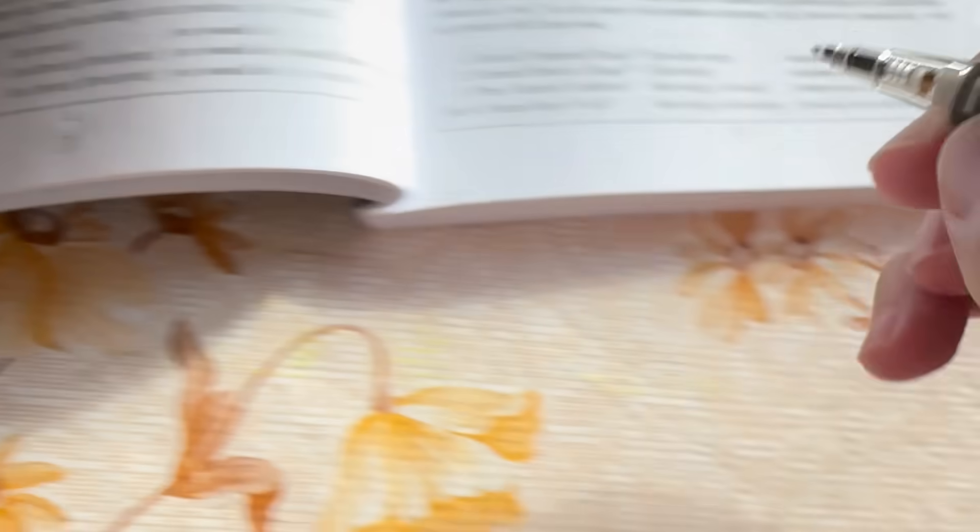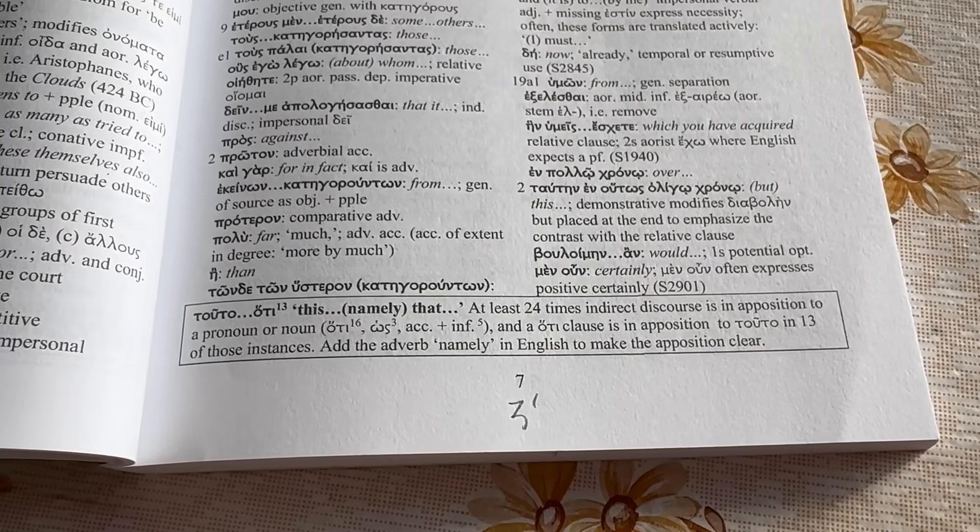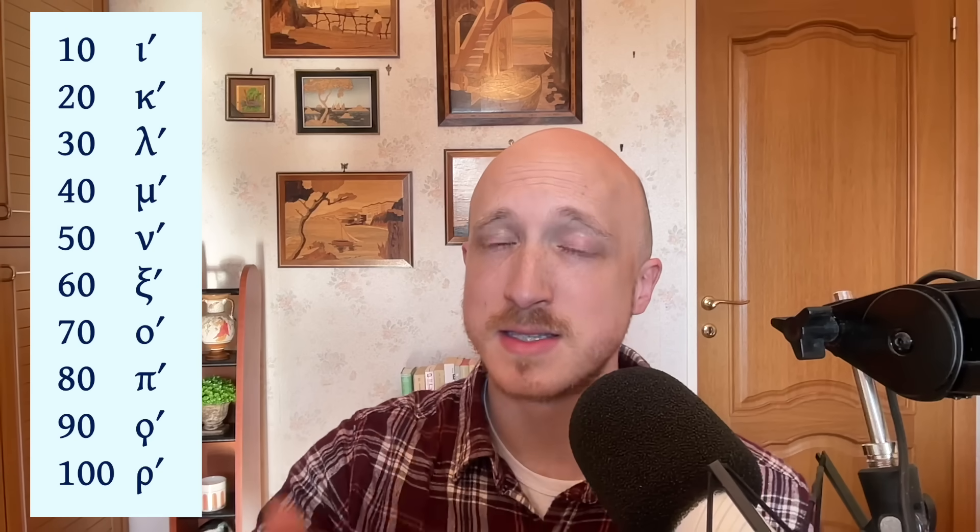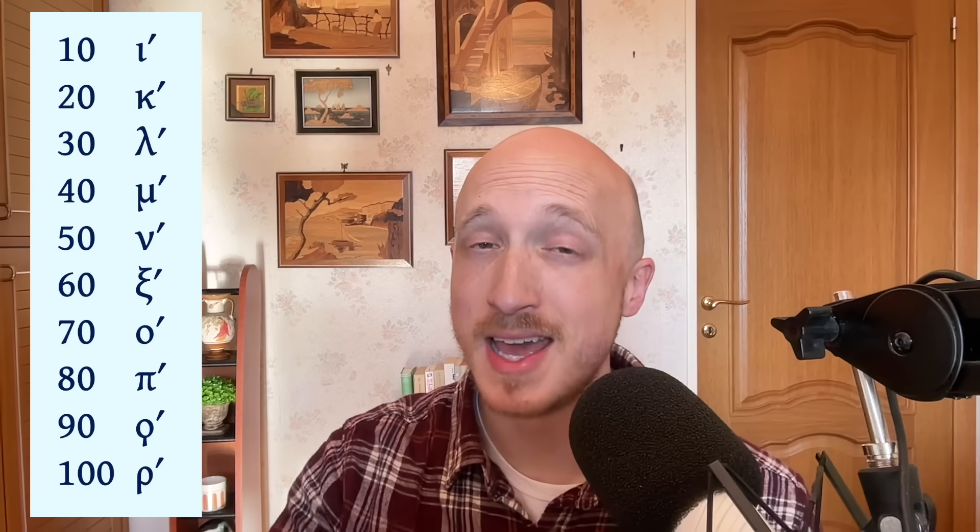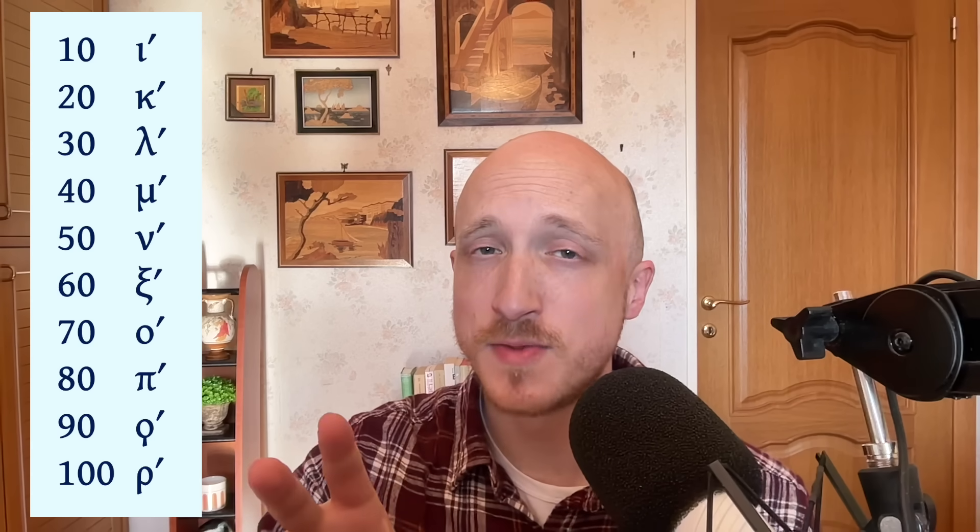Well what happens after 10? Then we do iota alpha, that's 11. Iota beta is 12, iota gamma is 13, and so forth all the way through 19. Then kappa is 20, 21, 22, 23, 24, and so forth all the way to lambda which is 30. And the same thing for 31, 32, 33, all the way through 39. 40 is mu, 50 is nu, 60 is xi, 70 is omicron.